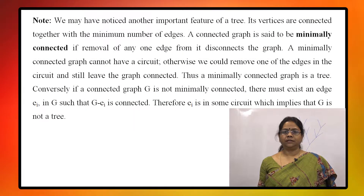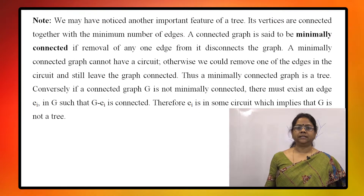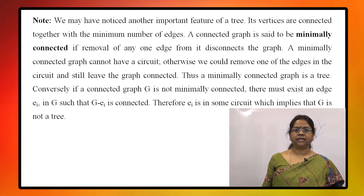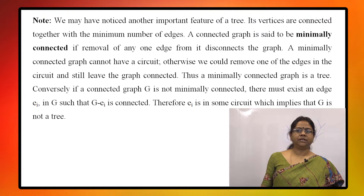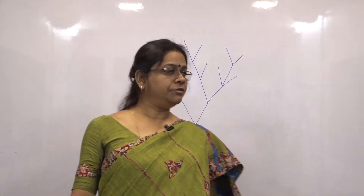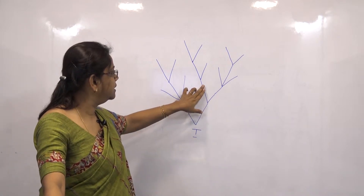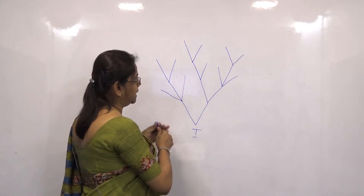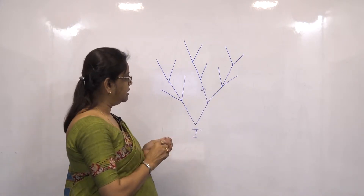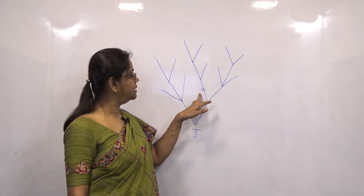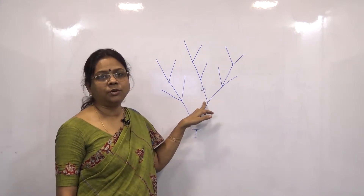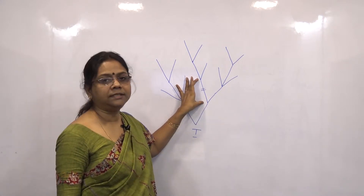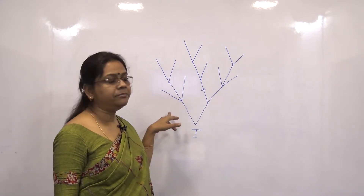Another feature is that it has the minimum number of edges. A connected graph is said to be minimally connected if removal of any one edge from it disconnects the graph. Here in a tree, if we delete any of the edges — say this edge connects these two vertices — if we delete this, there remains no other connection between these two vertices, so the tree becomes disconnected.